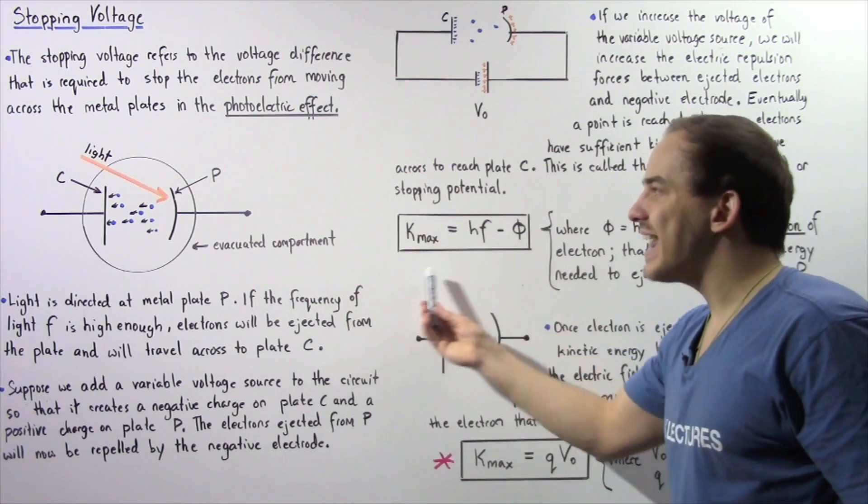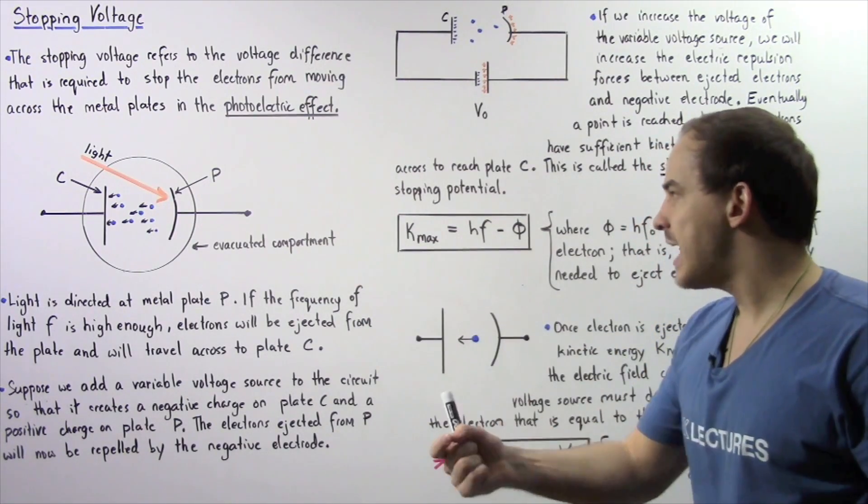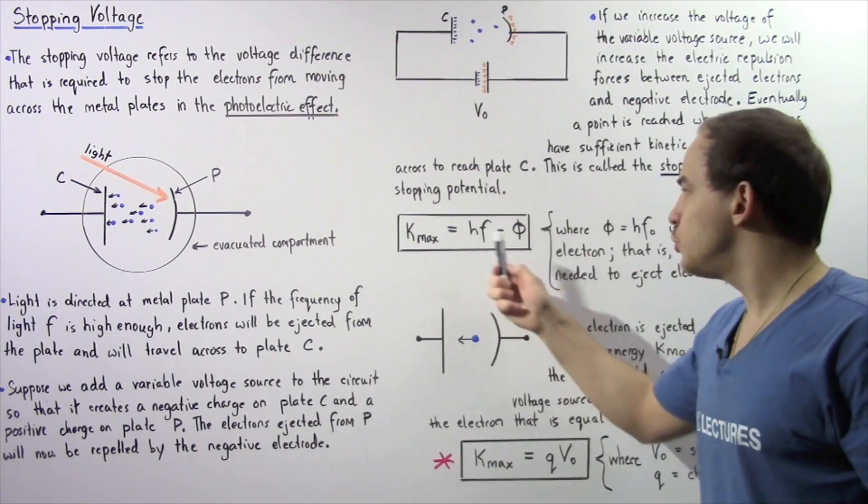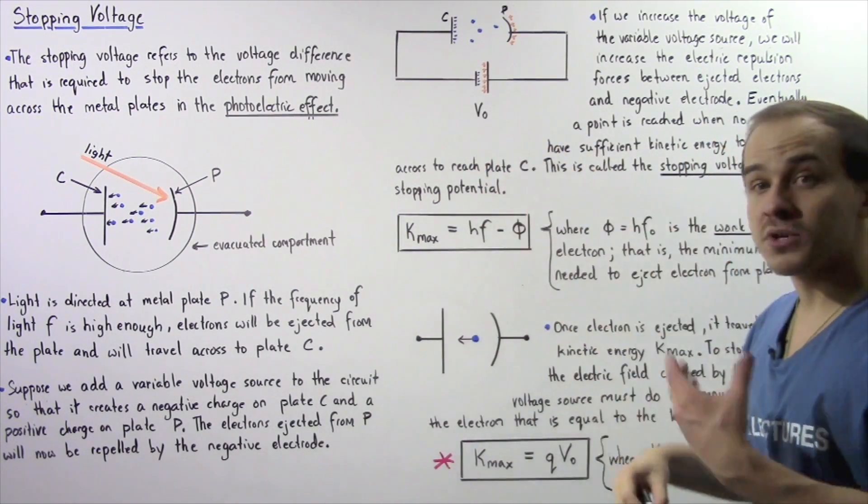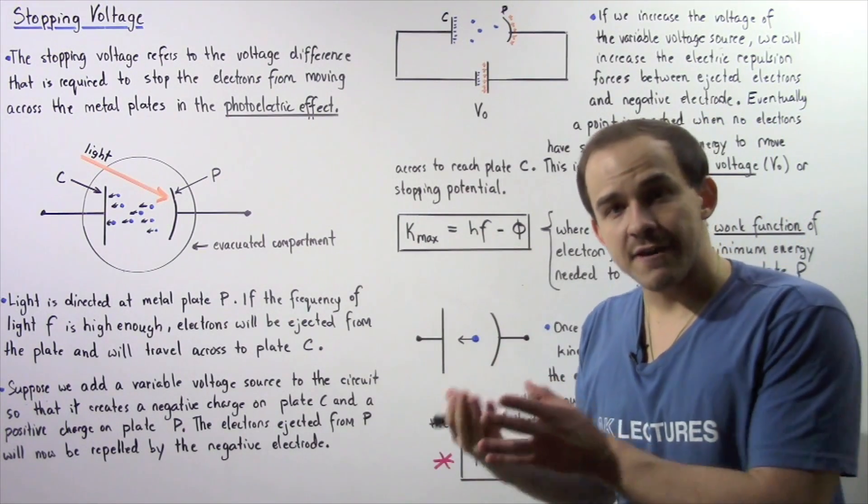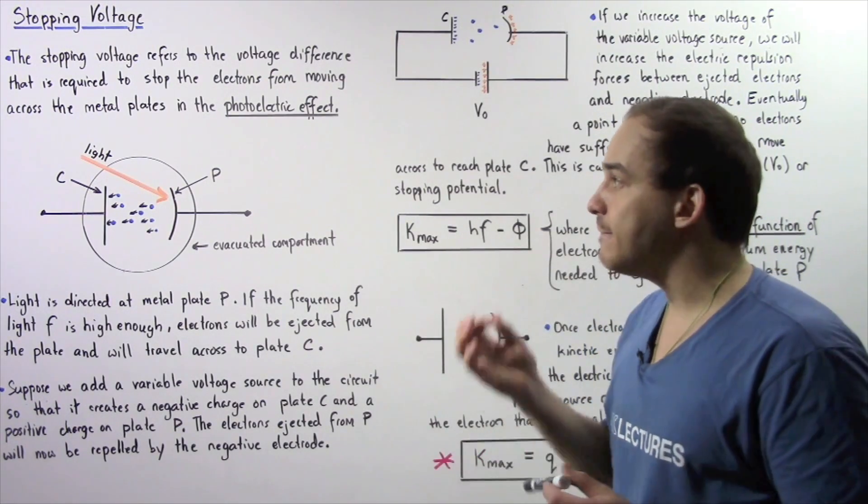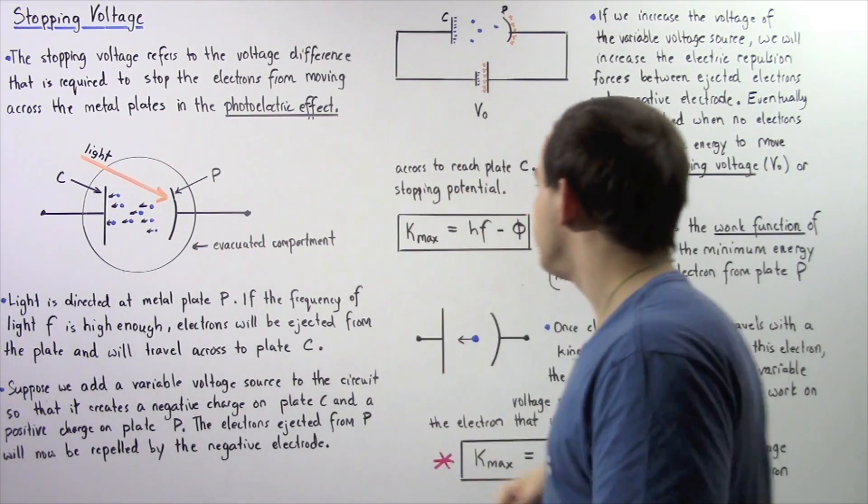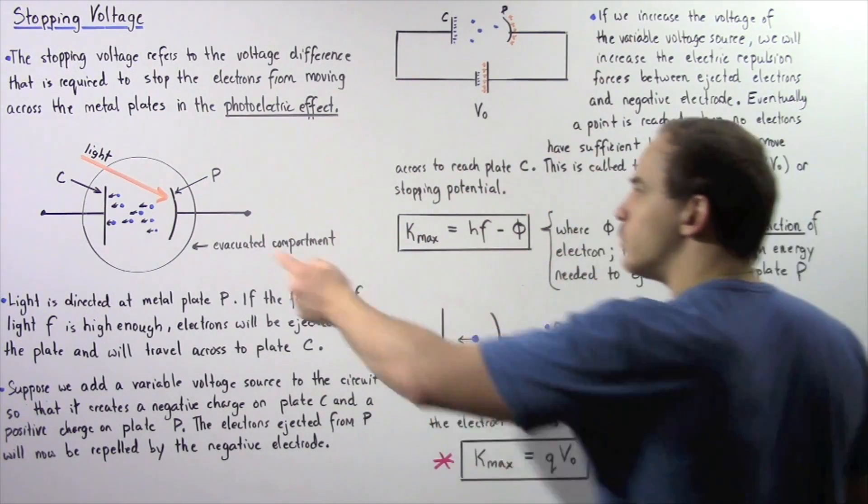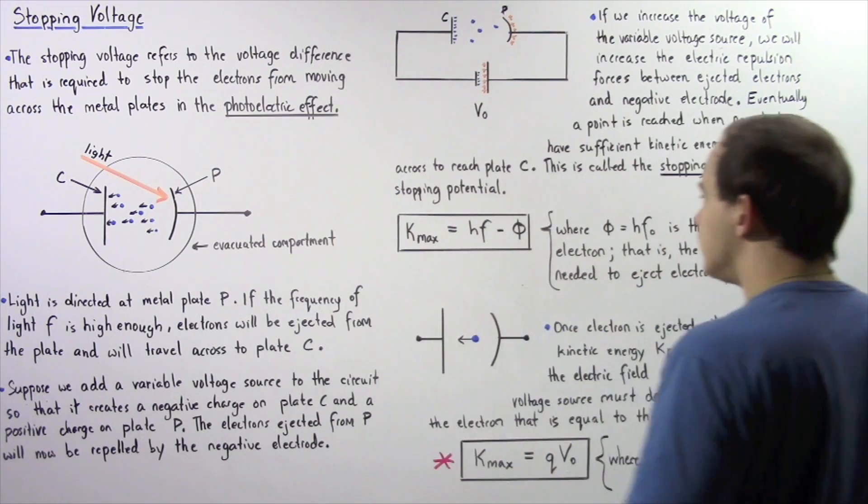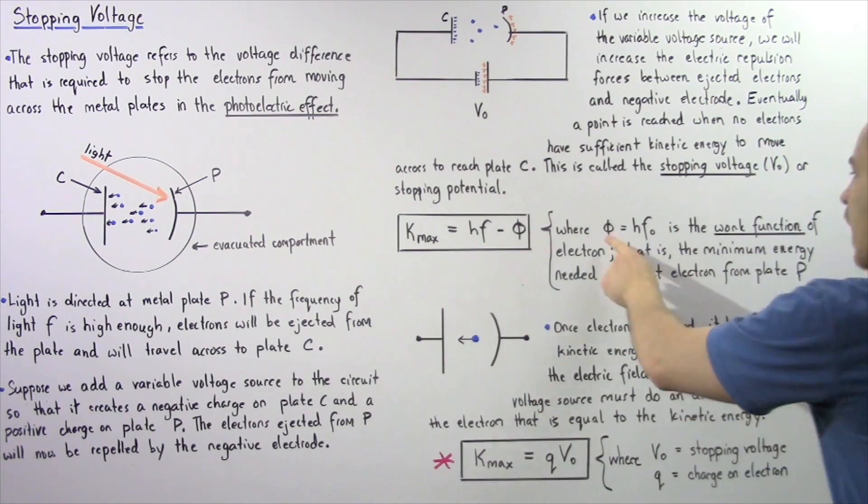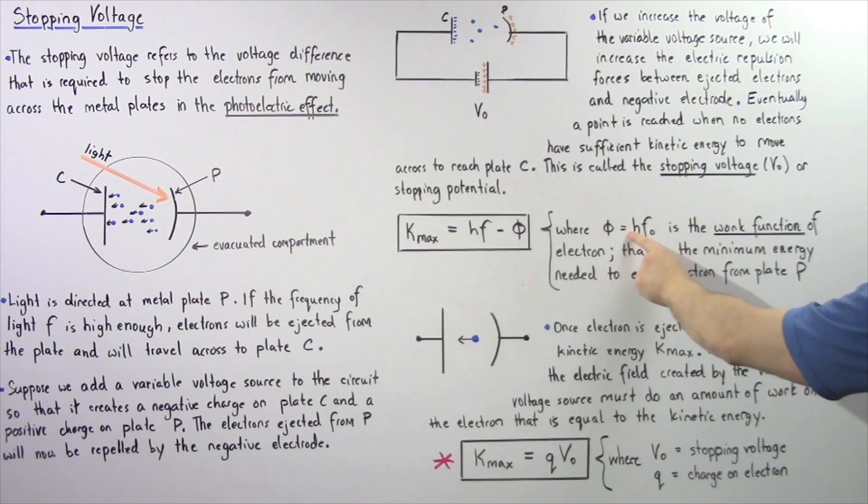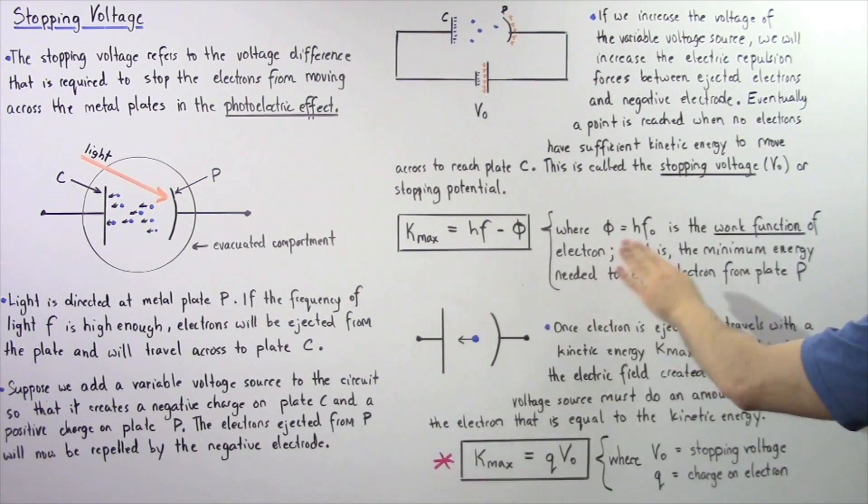So, the maximum kinetic energy that an ejected electron has is equal to the difference between HF and phi, where HF represents the quantity of energy carried by a photon in the following beam of light, where F is the frequency of oscillation of the light, and phi is something known as the work function.